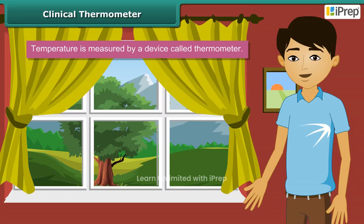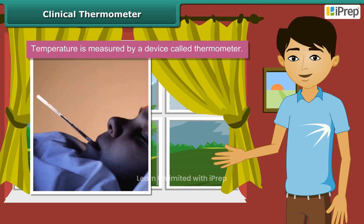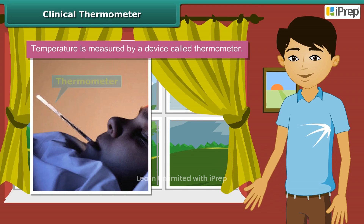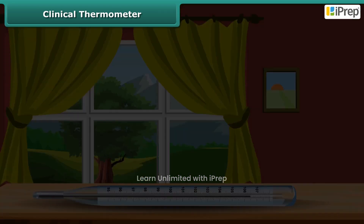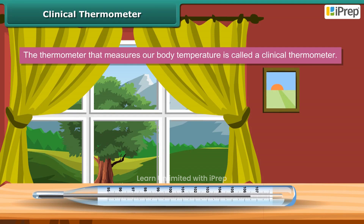Now that we have learned about temperature, let us look at the device used to measure temperature. It is called a thermometer. The most common use of a thermometer is to measure our body temperature. Such a thermometer is called a clinical thermometer.